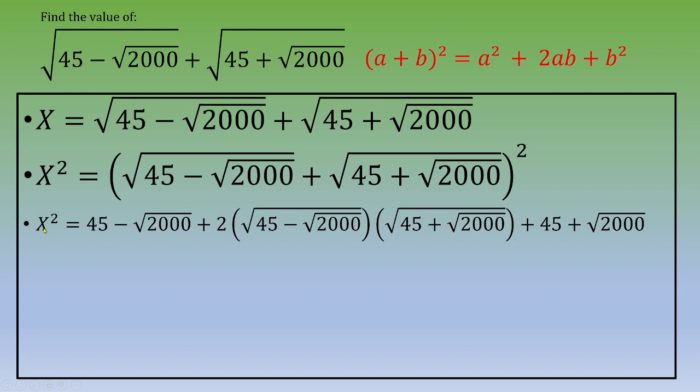x² equals 45 minus square root of 2000 plus 2 times square root of 45 minus square root of 2000 times square root of 45 plus square root of 2000 plus 45 plus square root of 2000.